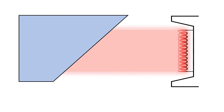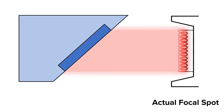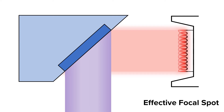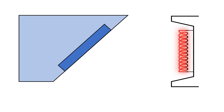Second, the actual focal spot. The actual focal spot is the physical area on the anode that, when bombarded by the incident electron beam, emits x-rays. Third is the effective focal spot. The effective focal spot is the area projected onto the patient. The size of the actual focal spot is determined by the size and shape of the incident electron beam when it strikes the anode surface.